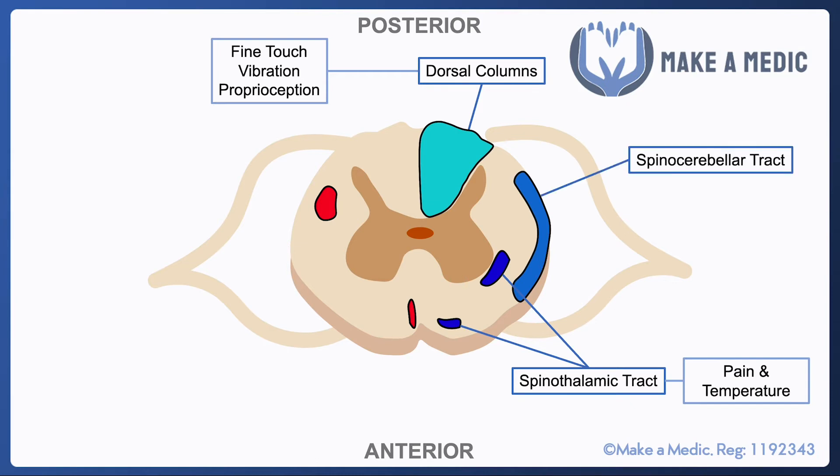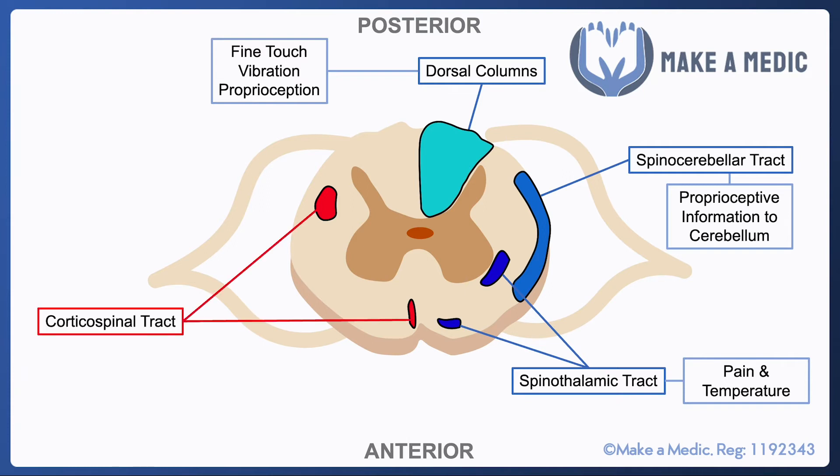We also have something called the spinocerebellar tract, which is responsible for conveying proprioceptive information up towards the cerebellum. For the purposes of exam questions it's slightly less important, so don't worry too much about that. Just keep an eye on where the dorsal columns and the spinothalamic tracts are.